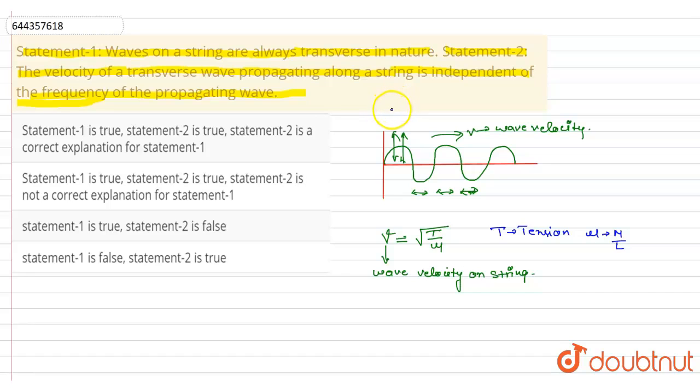So, another thing, there is no connection between statement 2 and statement 1. So, we can say, statement 1 and statement 2 both are true, and statement 2 is not a correct explanation for statement 1. So, from that, we can say, option B is right. Thank you.